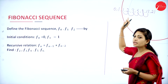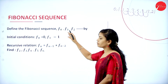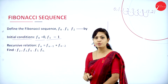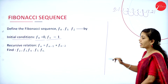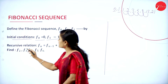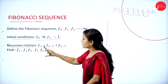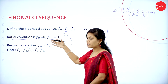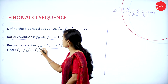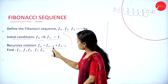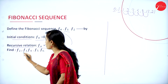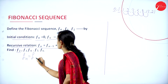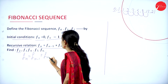The Fibonacci series is represented as F0, F1, F2, etc. By initial conditions, F0 = 0 and F1 = 1. The recursive relation is: Fn = Fn-1 + Fn-2. Using this Fibonacci sequence method, we can find the recursive relation. First, find the value of F2.